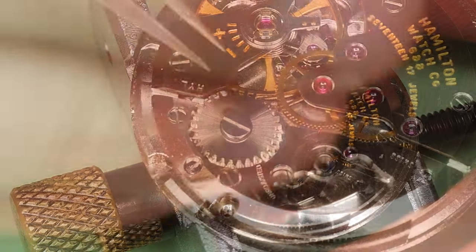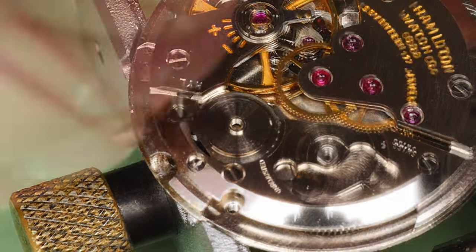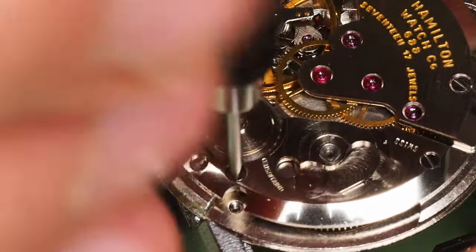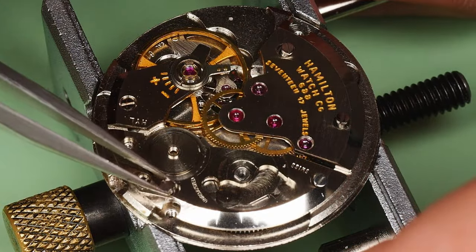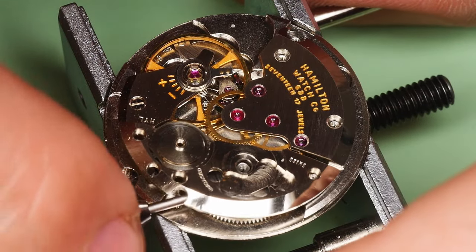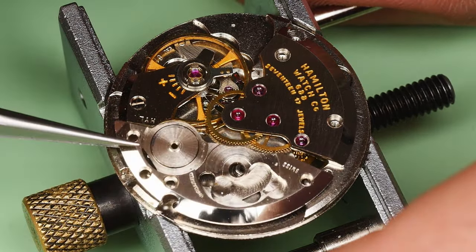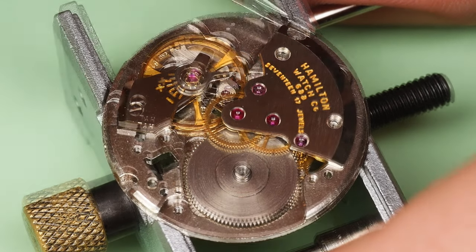Righty-loosey to remove the crown wheel screw and crown wheel. It's also important to grab the crown wheel ring now, otherwise I'll be digging it out from the bottom of the cleaning solution later. Now I can loosen and remove all of the movement screws and pry the barrel bridge up with a screwdriver. Ah, the setting lever screw. How could I ever forget about you?